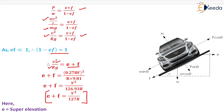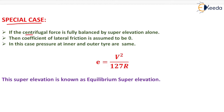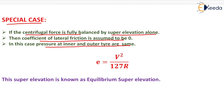Here e is the super elevation, and this formula e + f = V²/127R is very important from the GATE examination point of view. A special case arises when the centrifugal force is fully balanced by super elevation only, meaning the coefficient of lateral friction f is assumed to be zero. In that case, the pressure at inner and outer tires are the same, and e = V²/127R, which is called the equilibrium super elevation.